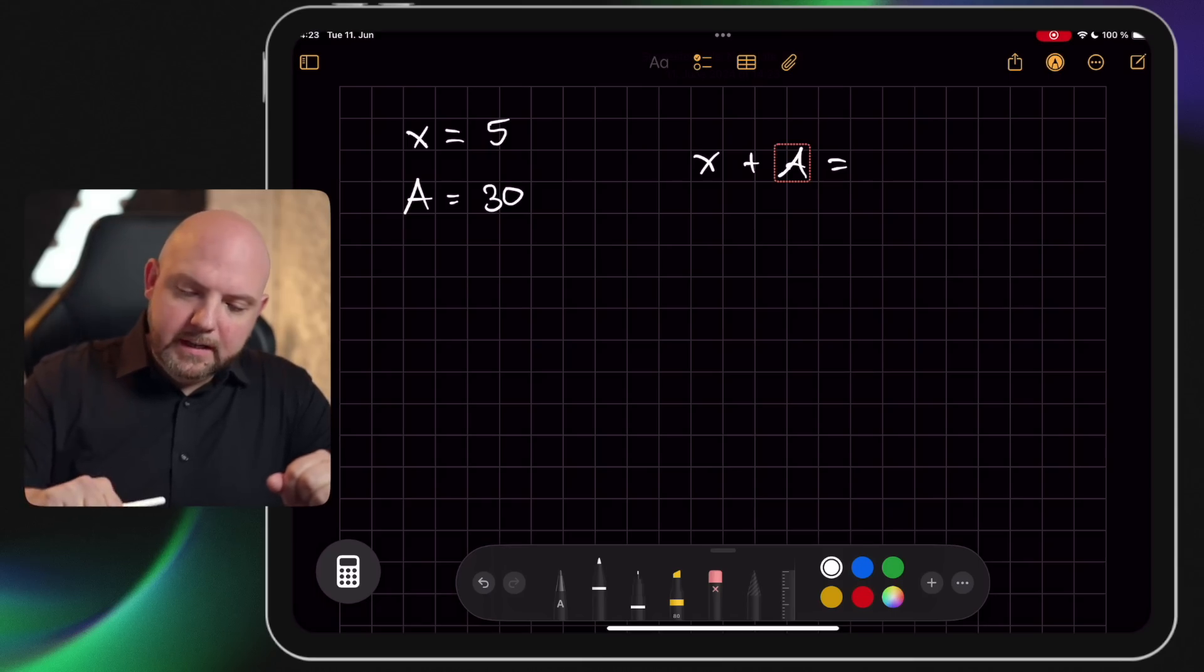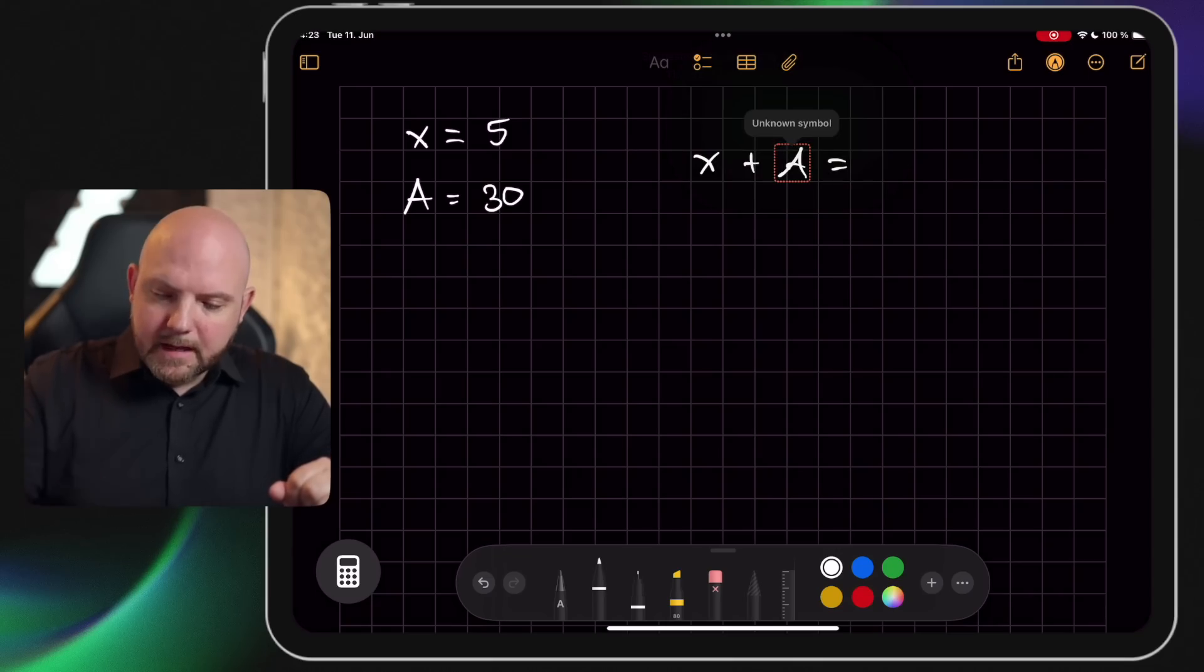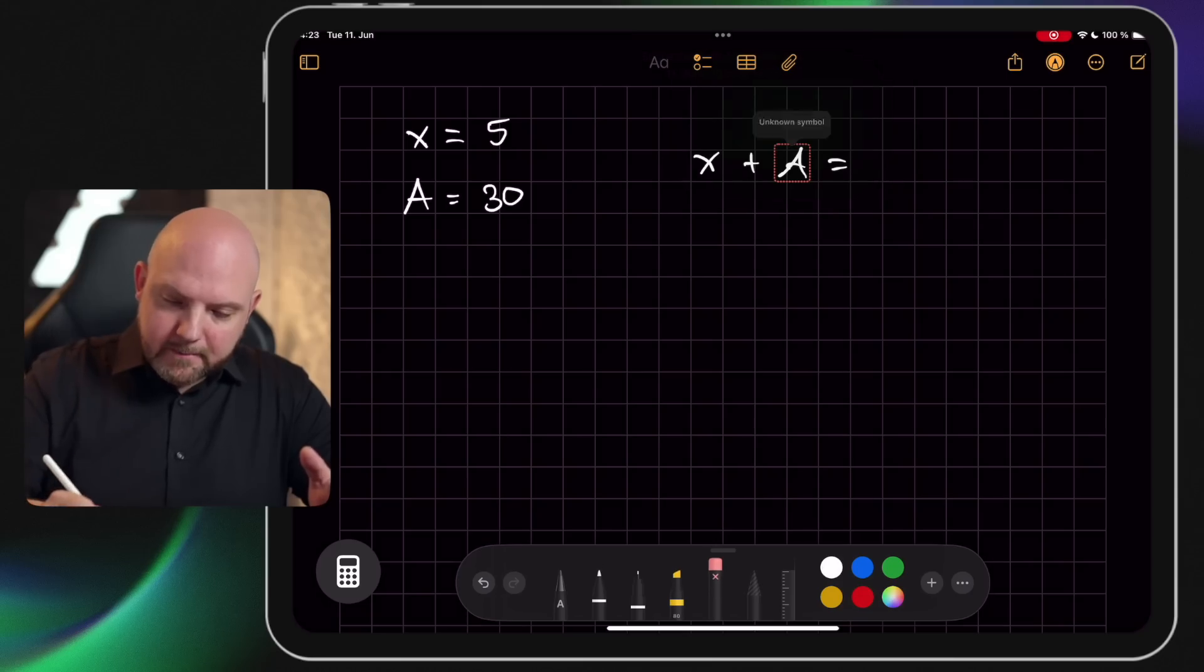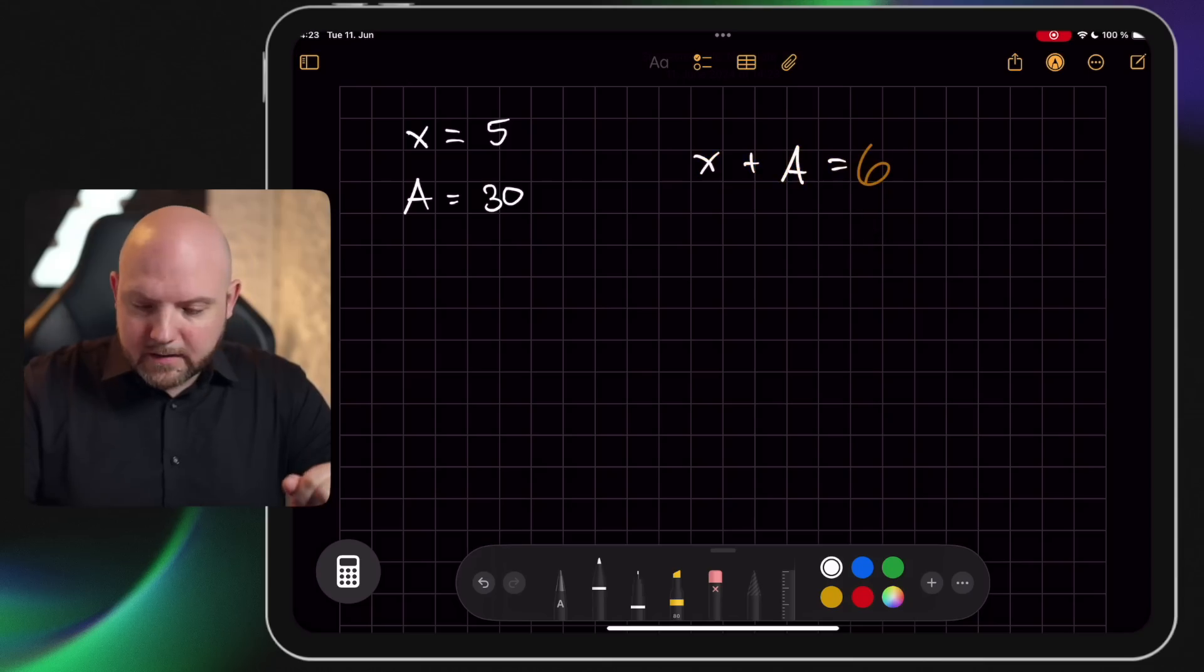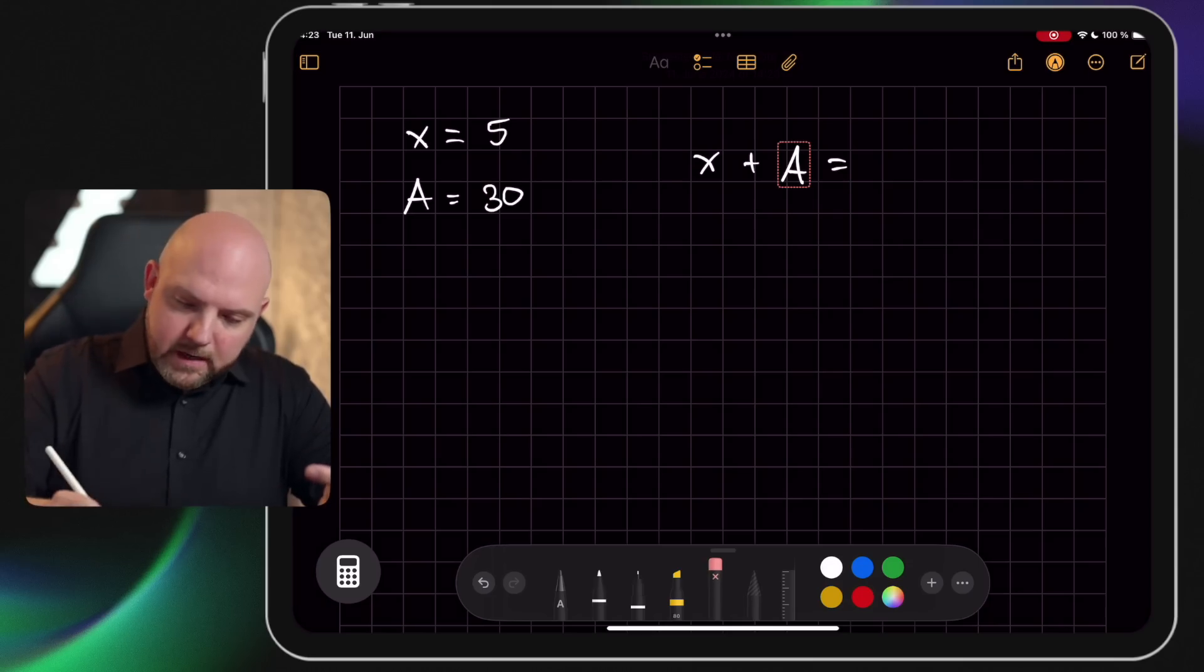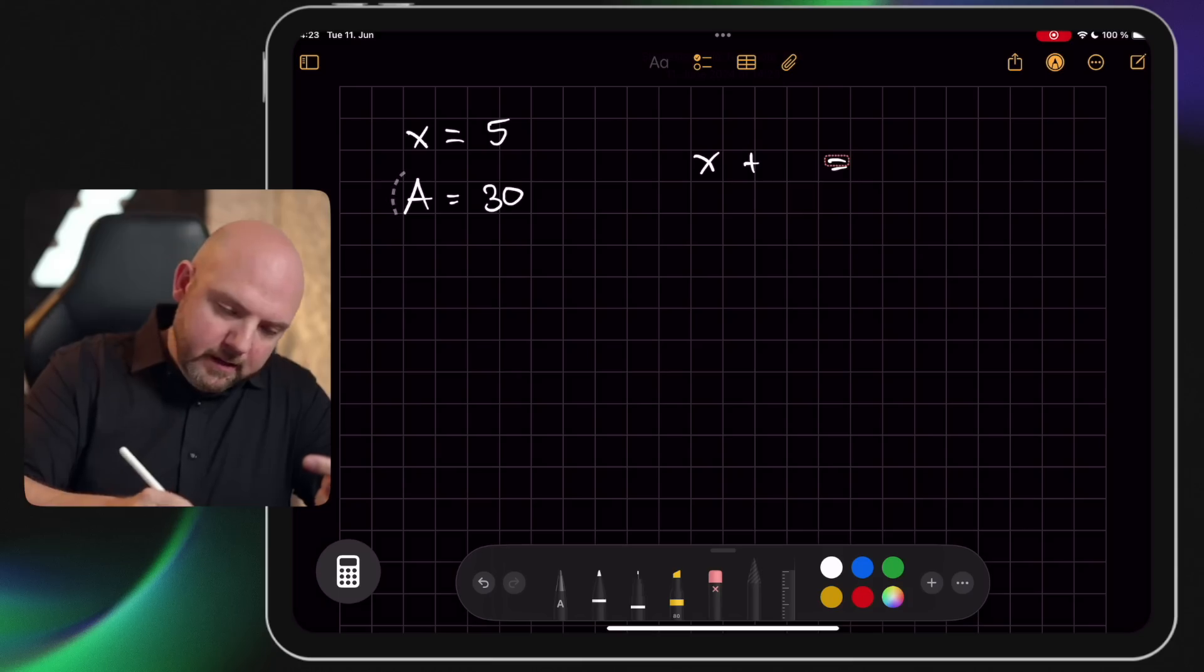So you see already here there's a red box around the A. If I tap on this it says unknown symbol, so it seems that it has sometimes some issues recognizing my handwriting. See now it took it, tried it and failed again.